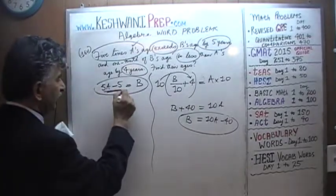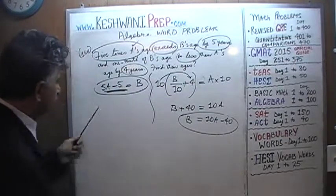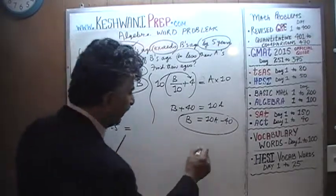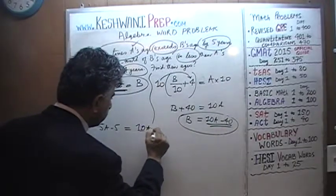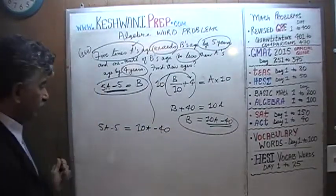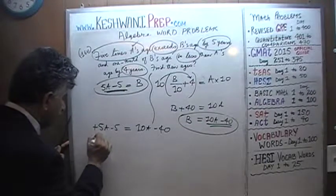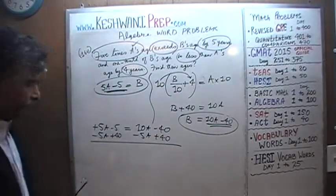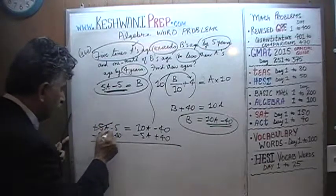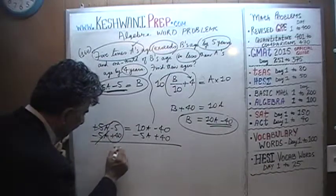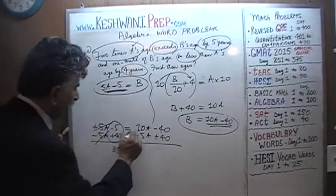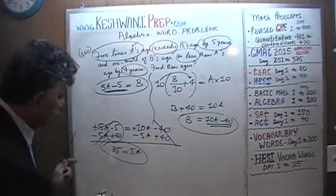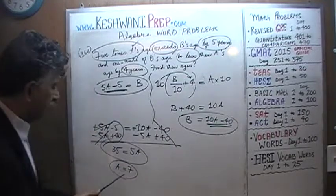Since both quantities equal B, we can set them equal: 5A minus 5 equals 10A minus 40. Bring the A's to one side and the numbers to the other — subtract 5A from both sides and add 40 to both sides. Positive 5A and negative 5A cancel out. Negative 5 and positive 40 gives us 35. Positive 10A minus 5A gives us 5A. So 5A equals 35, which means A equals 7.